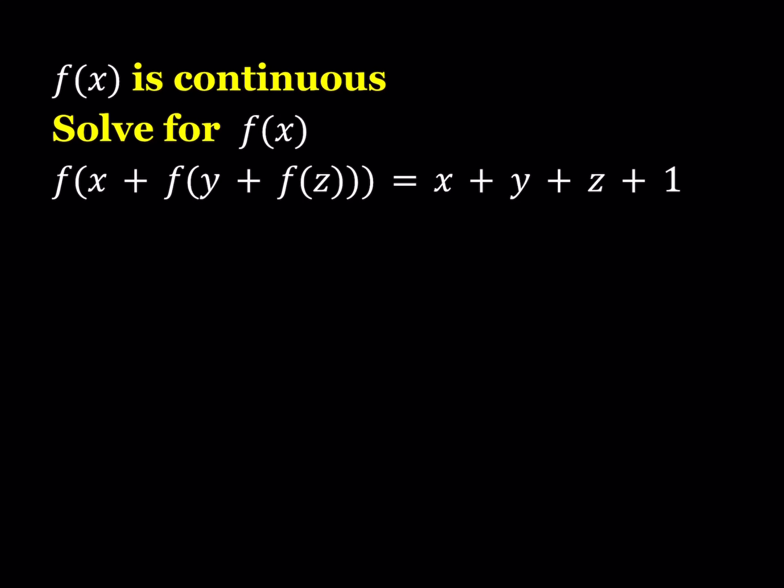Now how do we go about solving this problem? We're going to use a similar idea, and I'll share the link below for the other video that's very similar to this one. As with many functional equations, we're going to start by replacing some variables with 0. I'm going to replace y and z with 0 because that's going to simplify things a great deal. So let's go ahead and do it.